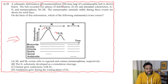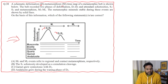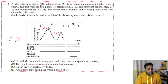On the basis of this information, we have to determine which of the following statements is or are correct. The statements say: A) M1 and M2 events refer to regional and contact metamorphism respectively. B) S1 schistosity developed as a crenulation cleavage. C) Garnet grew syntectonic with D1 and andalusite grew during the waning phase of D2.